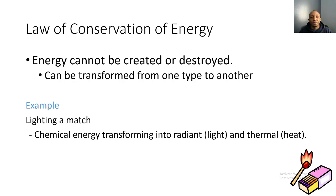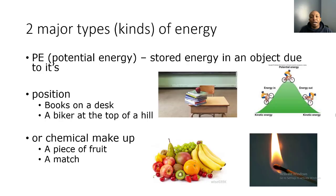There are two major types of energy. The first type is potential energy — it's stored energy in an object due to its position. For example, books on a desk are not moving, but they have a position above the ground. The higher they are above the ground, the more potential energy they have. Similarly, a biker at the top of a hill has much more potential energy than at the bottom — the higher an object is, the more potential energy it has.